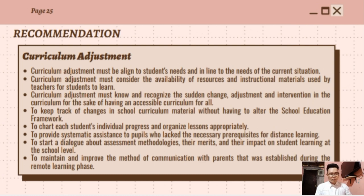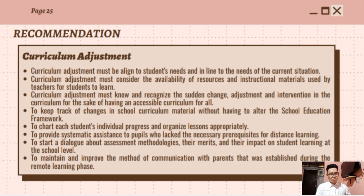To keep track of changes in school curriculum material without having to alter the social education framework — take note of that. Next is to chart each student's individual progress and organize lessons appropriately. In this part, providing an assessment that can be used to track each student's progress in the classroom is key. Assessment and evaluation are very important parts of a curriculum.